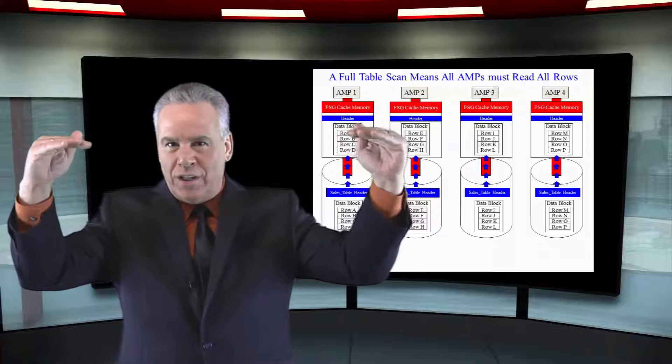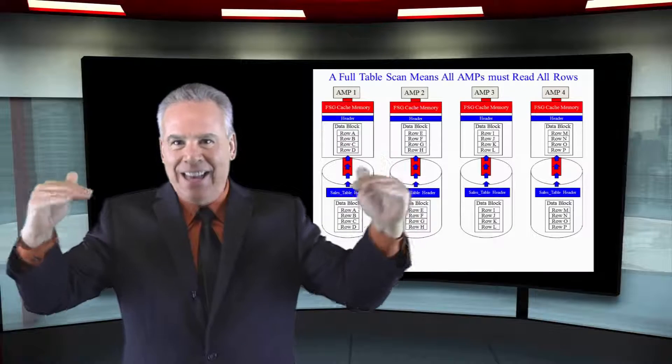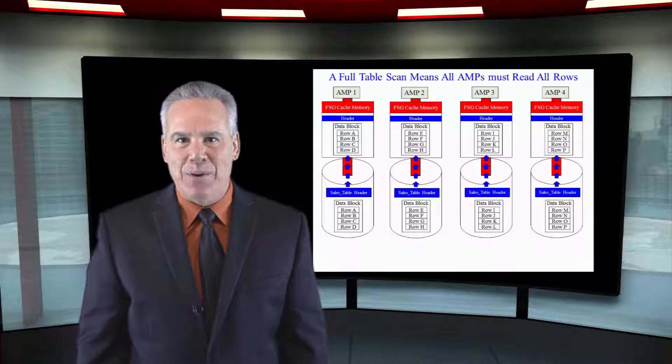Each amp will sequentially read the rows that they own in that block until they're at the end. Full table scan.